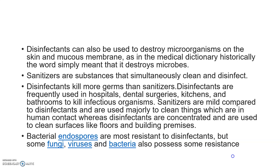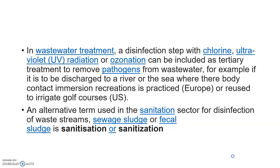Bacterial endospores are more resistant to disinfectants, but some fungi, viruses, and bacteria also possess some resistance. In wastewater treatment, a disinfection step with chlorine is used. Chlorine is used in households and to clean well water by chlorination. The disinfection step with chlorine, ultraviolet radiation, or ozonation can be included as tertiary treatment to remove pathogens from wastewater before it is discharged to a river or the sea. An alternative term used in the sanitation sector for the disinfection of waste streams, sewage sludge, or fecal sludge is sanitization.